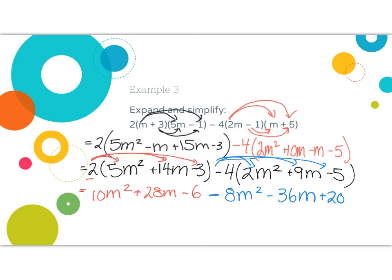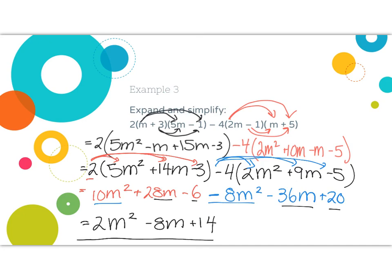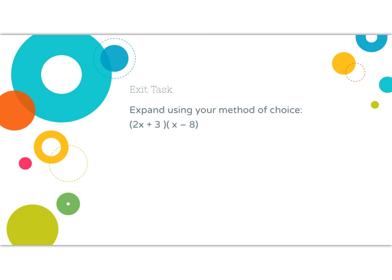Now collecting like terms within each bracket: 2 times the quantity 5m squared plus 14m take away 3, minus 4 times the quantity 2m squared plus 9m take away 5. Distributing: 10m squared plus 28m take away 6. Then negative 4 times gives take away 8m squared, take away 36m, plus 20. Combining like terms: 10m squared minus 8m squared is 2m squared; 28m minus 36m is negative 8m; negative 6 plus 20 is 14. Final answer: 2m squared take away 8m plus 14. For the exit task, expand using your method of choice — the answer is 2x squared minus 13x minus 24.